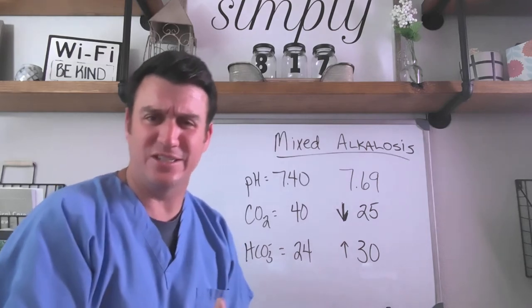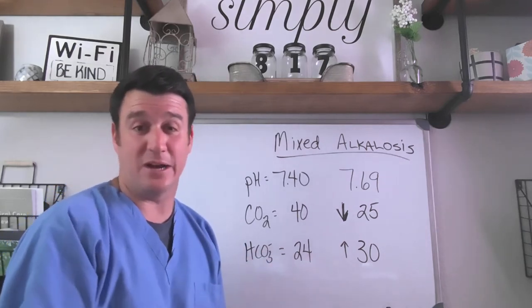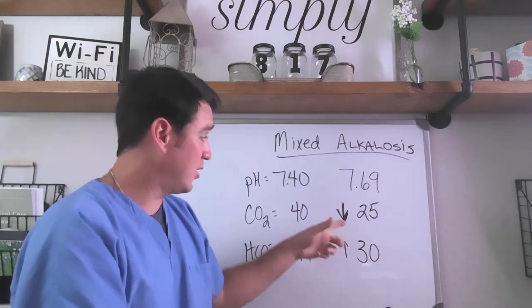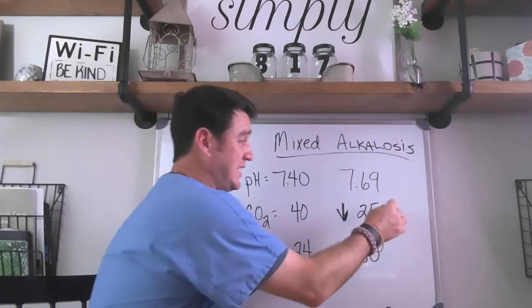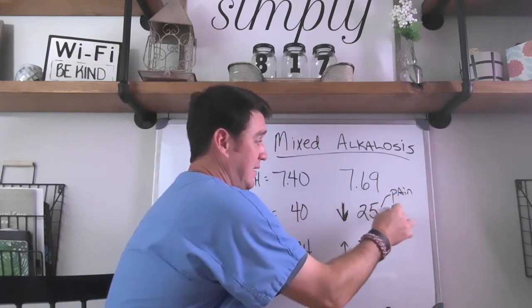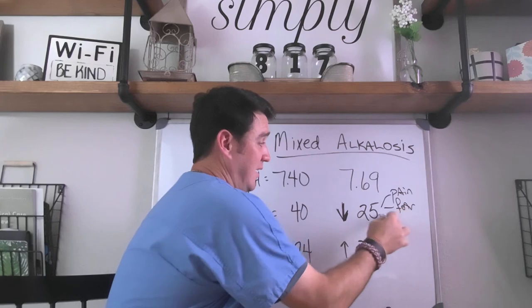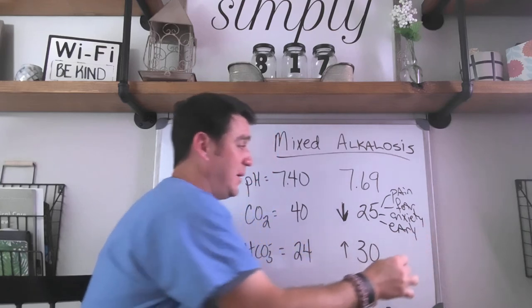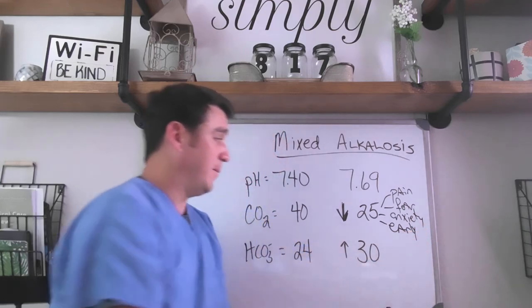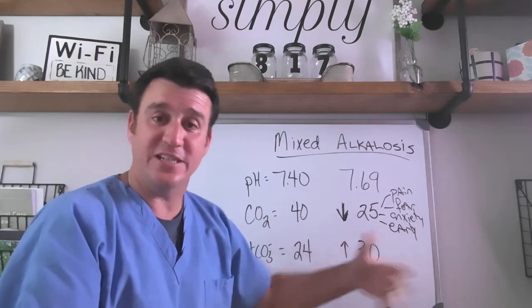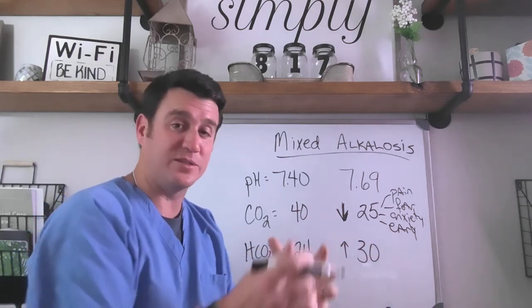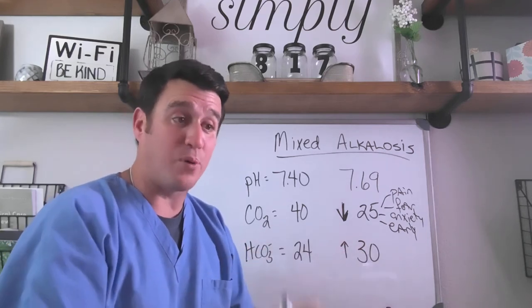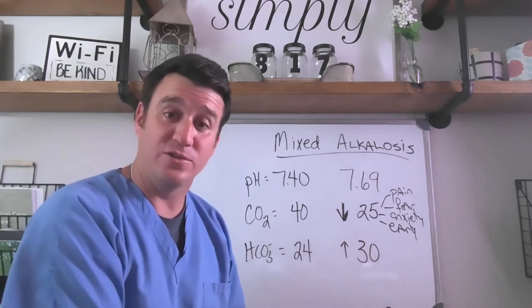What would cause this? To answer that question, you simply have to go back to what causes a respiratory alkalosis. We said there were several things: pain, fear, anxiety, and early disease processes. So if a person comes into the hospital and gets an ABG in the early stages of a pneumonia, it will probably present as a respiratory alkalosis, because that's what the body does.